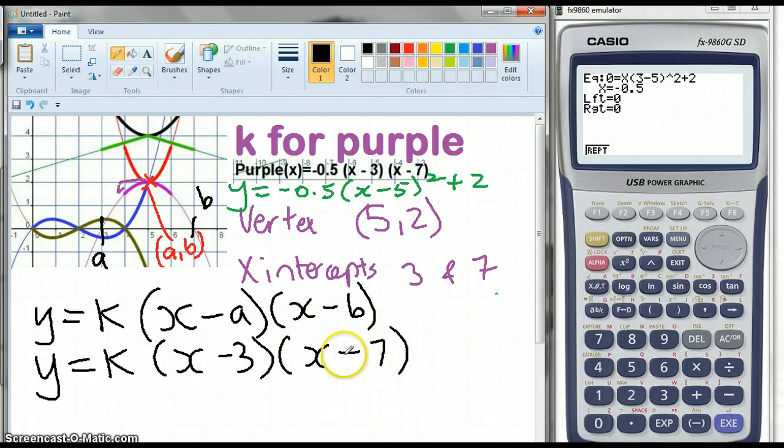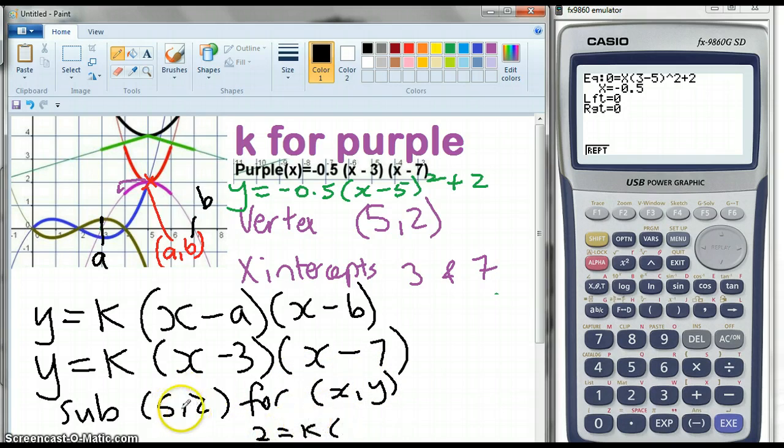Now sub the point, we might as well use the vertex, but normally it wouldn't be, it would be some other point. Sub 5, 2 for x, y. So my y is 2, so 2 equals k. My x is 5, 5 minus 3, 5 minus 7.